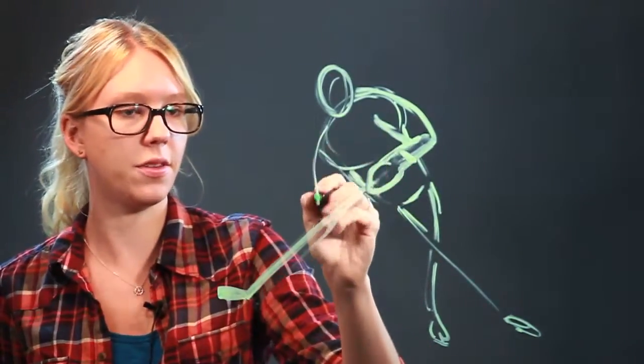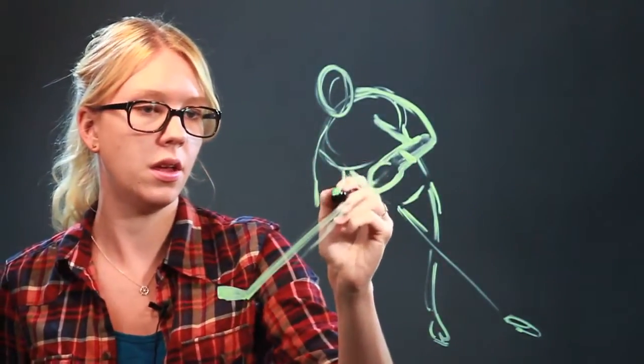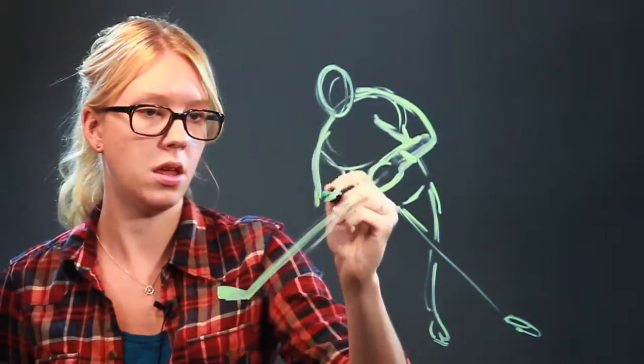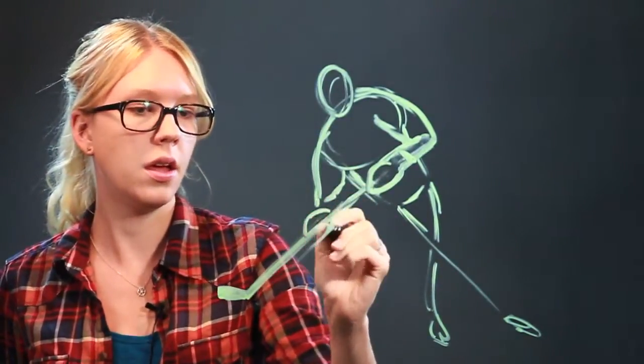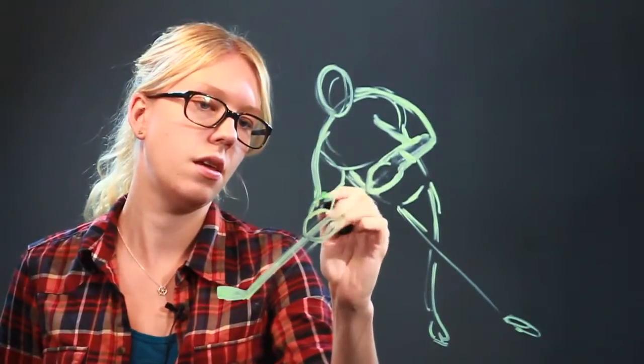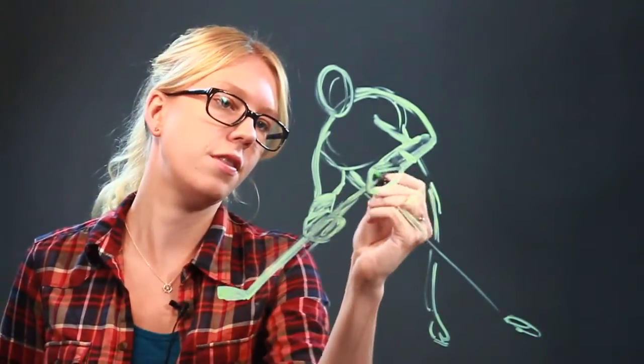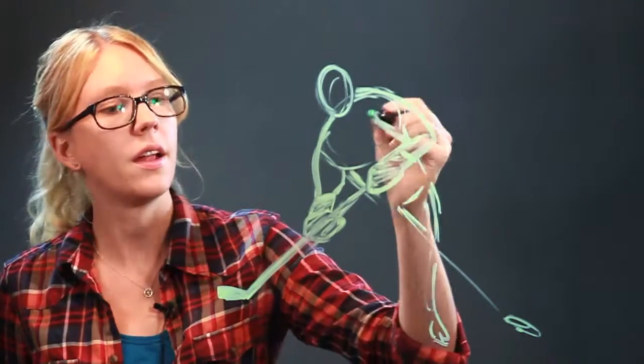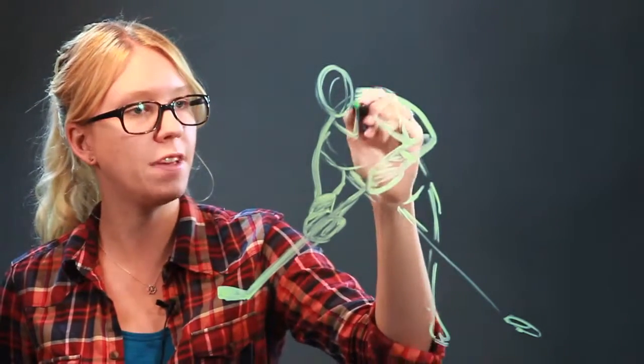And then this arm is going to come down and a big glove on this end. You can color in the gloves. Now the jerseys are v-neck.